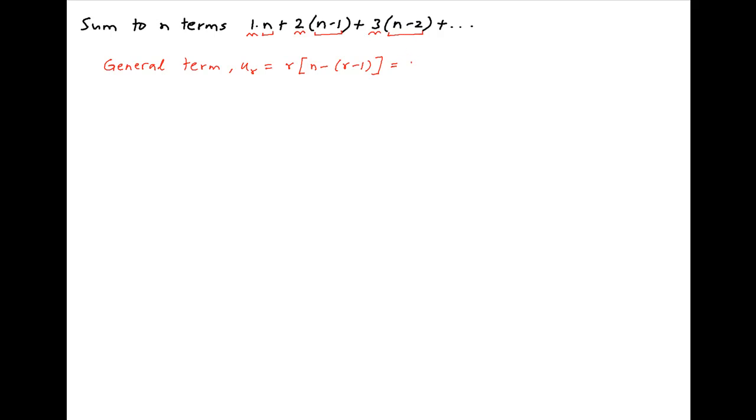ur can therefore be written as r times n minus r plus 1, which is equal to r times n plus 1 minus r square.